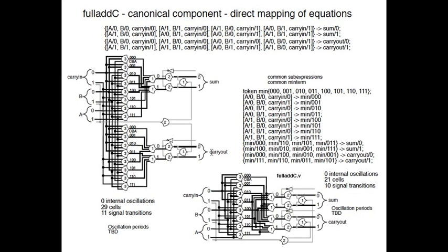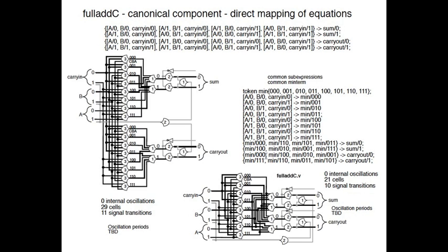We'll quickly go over the full adders. This is Full Adder C — the canonical mapping from the equations directly. You can see there are two big min-terms, and we can optimize by combining in-terms. We have some specification equations that go along with the optimizations and transformations we do on these adders, but we're not going to dwell on those.